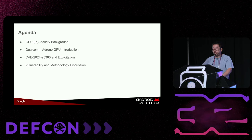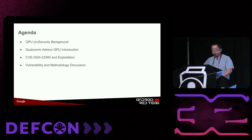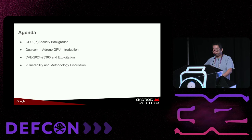Here's today's agenda. We'll first talk about GPU and security background. Then we'll go through the Qualcomm Adreno GPU introduction, talking about its architecture and where the issue patterns are. Then we'll dive into very technical details for CVE-2024-23380 and how we exploit it to gain root privilege. Lastly, we'll conclude our talk with methodology discussions.